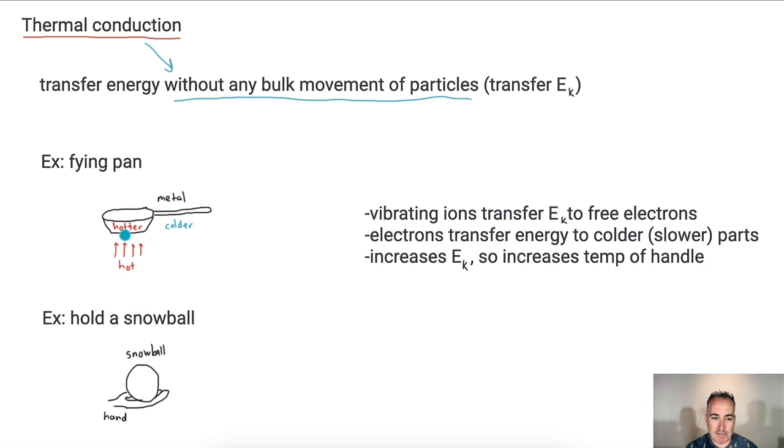I've got my frying pan. The flame makes this piece right here hotter. Since the metal is connected, these vibrating ions transfer kinetic energy to the free electrons. Those free electrons can go over here and because they've got energy, they can make these ones right here vibrate. That means you increase the kinetic energy of these areas, therefore you increase the temperature. So the energy gets transferred from the hotter to the colder.